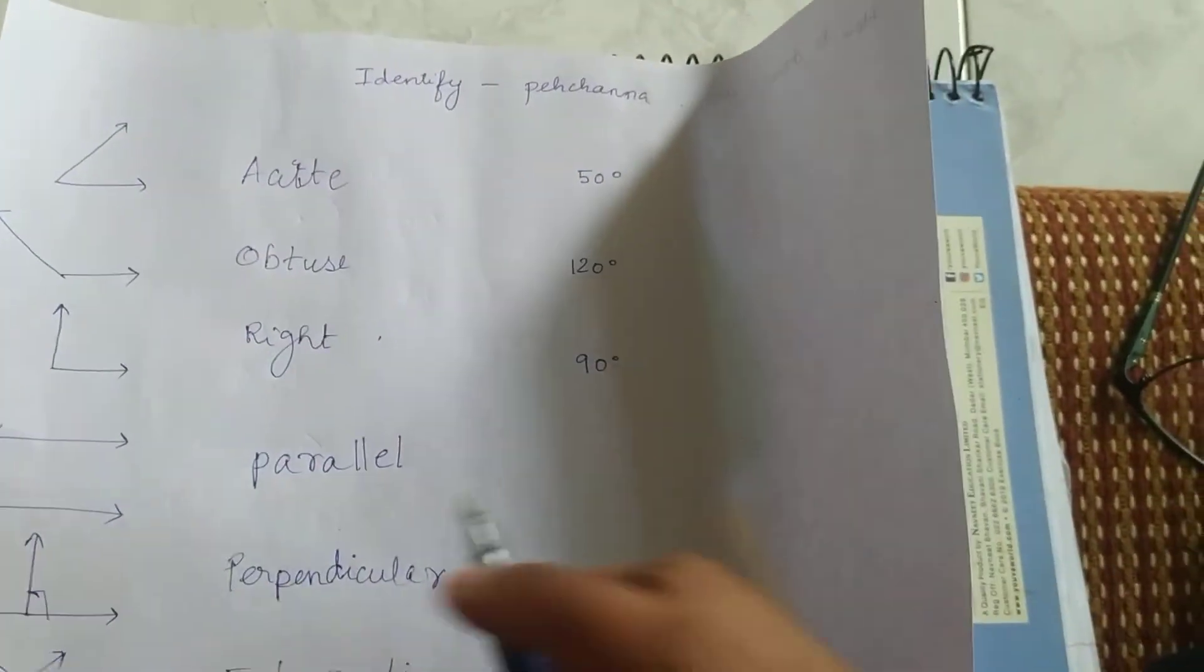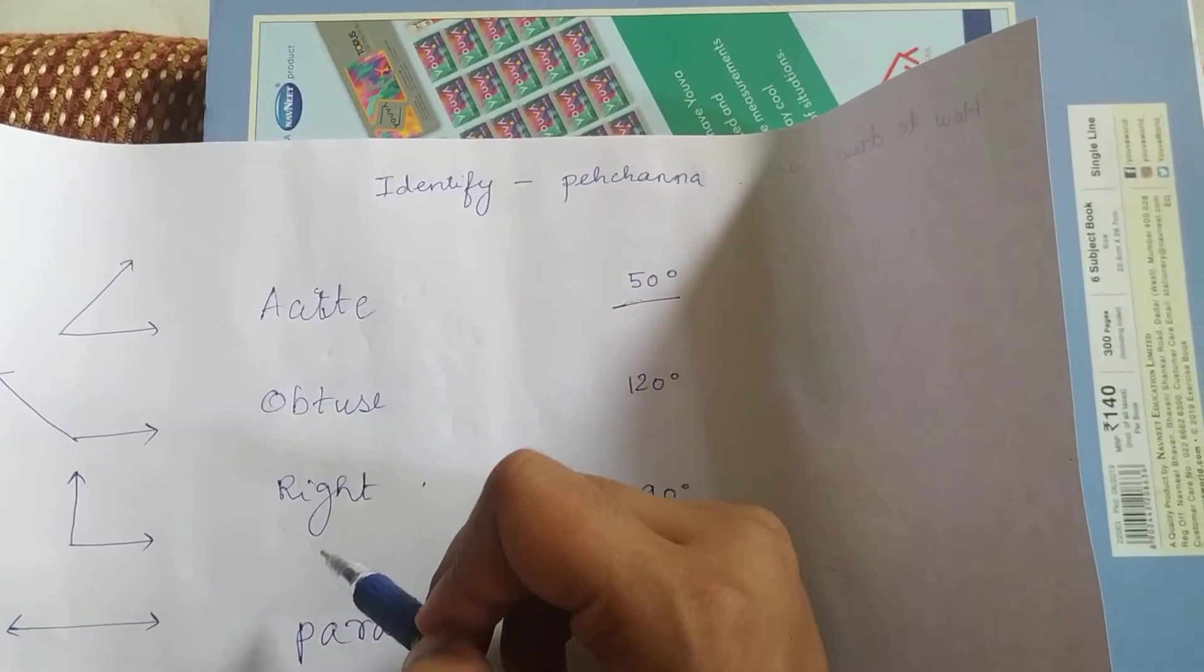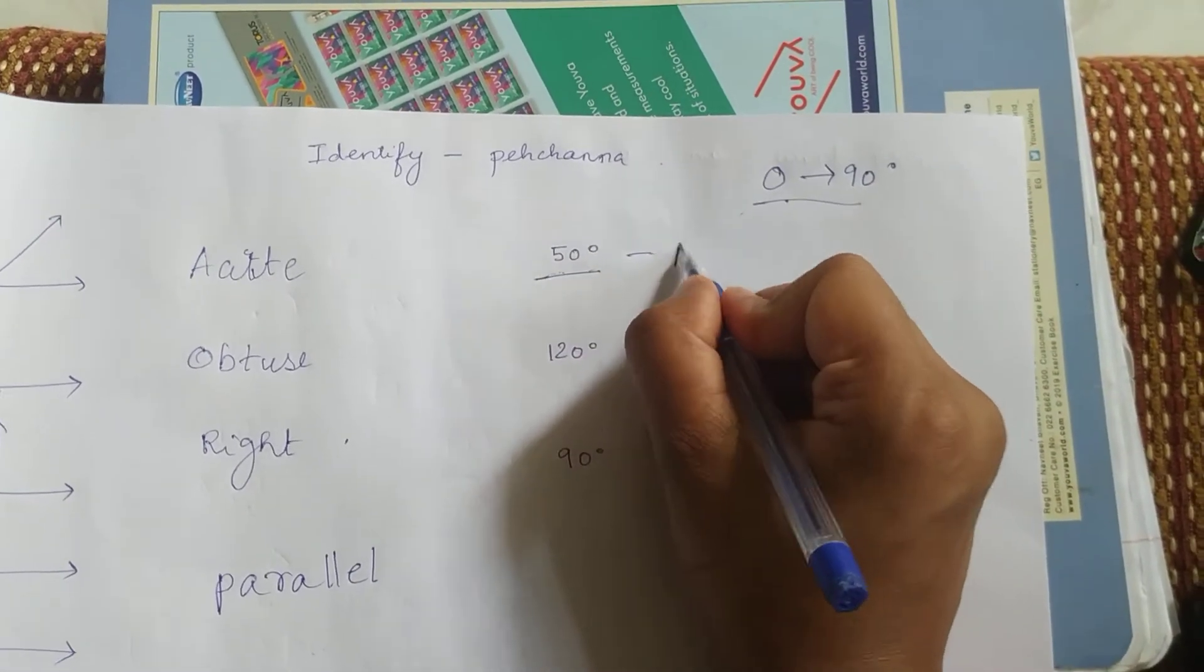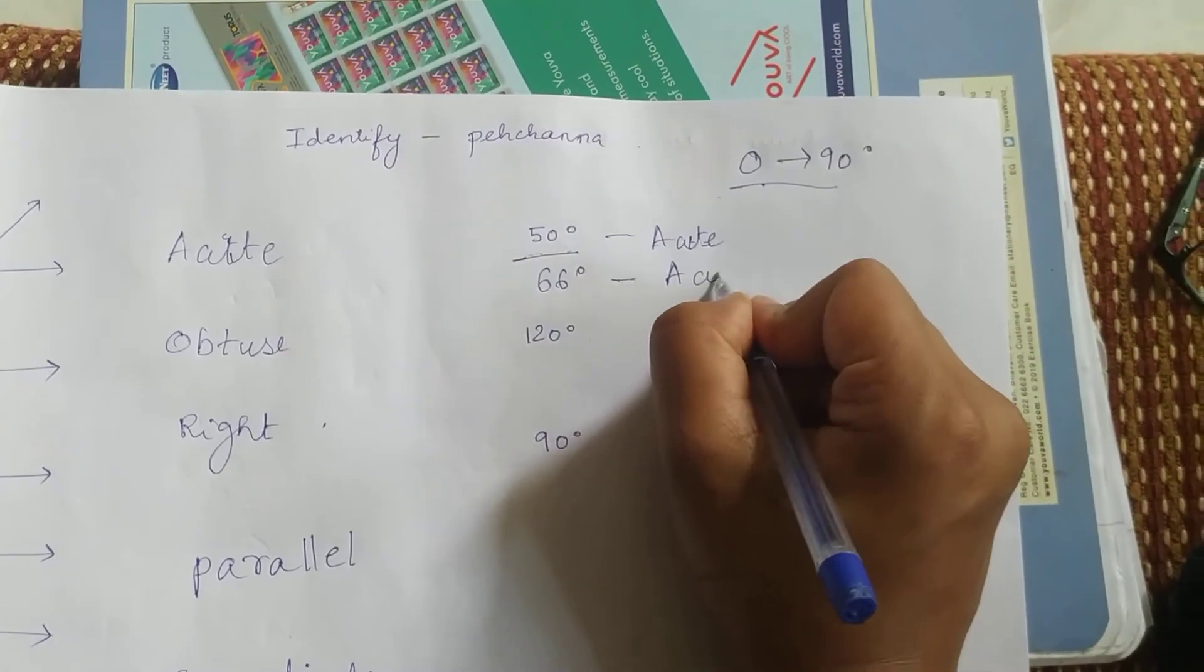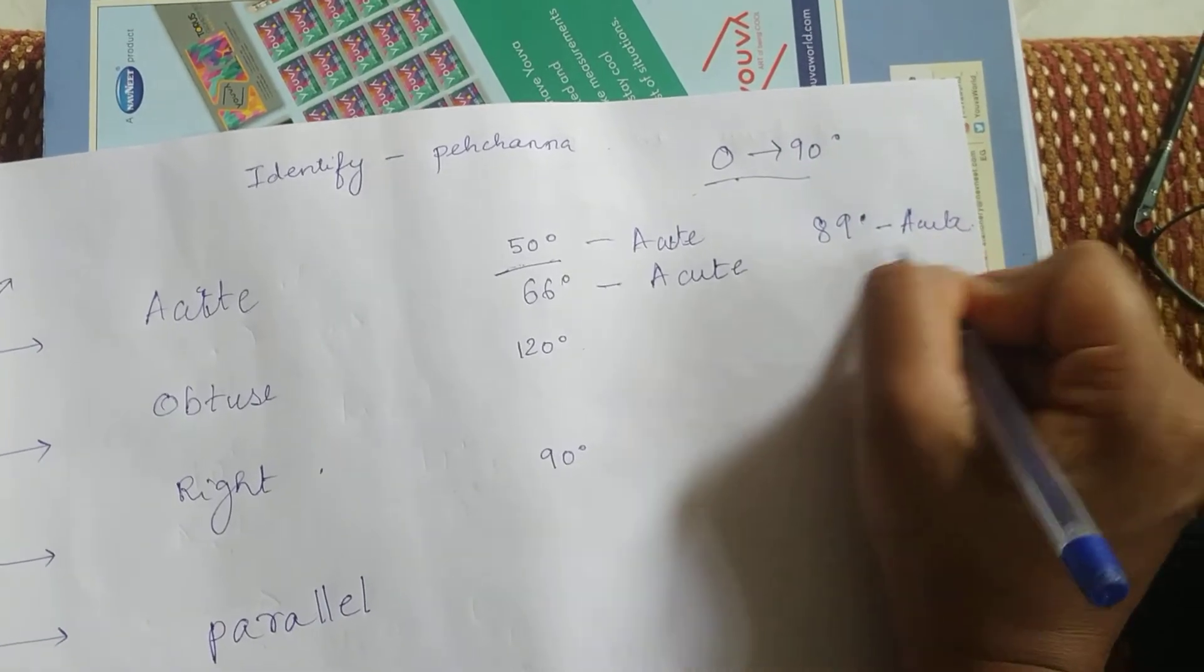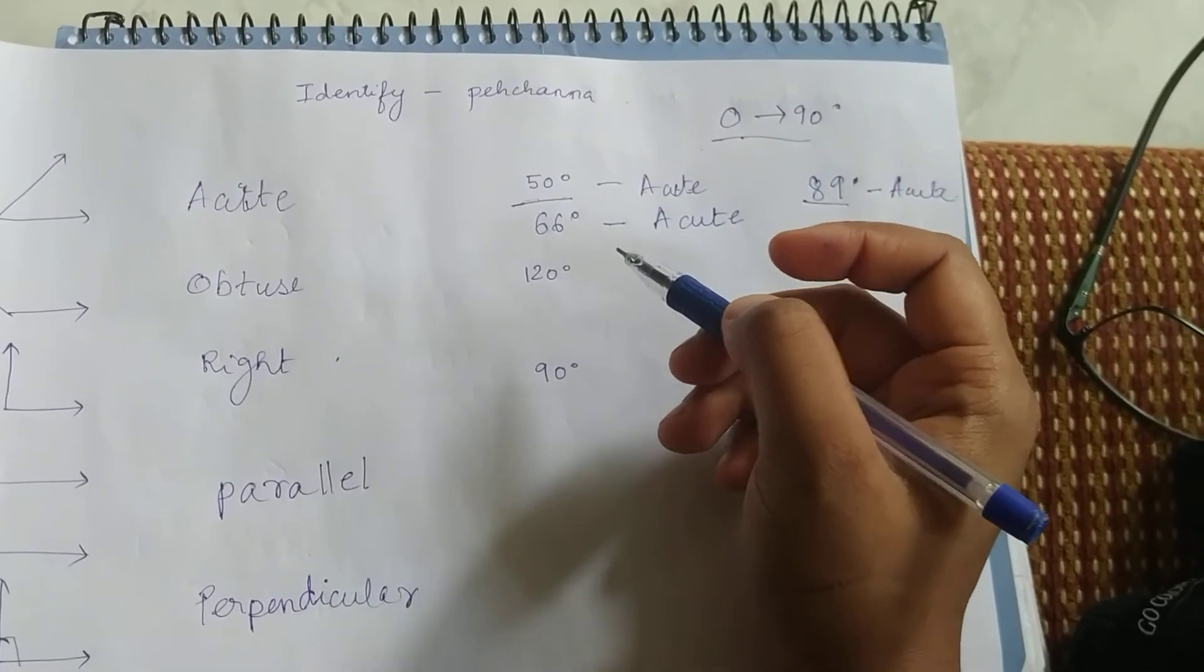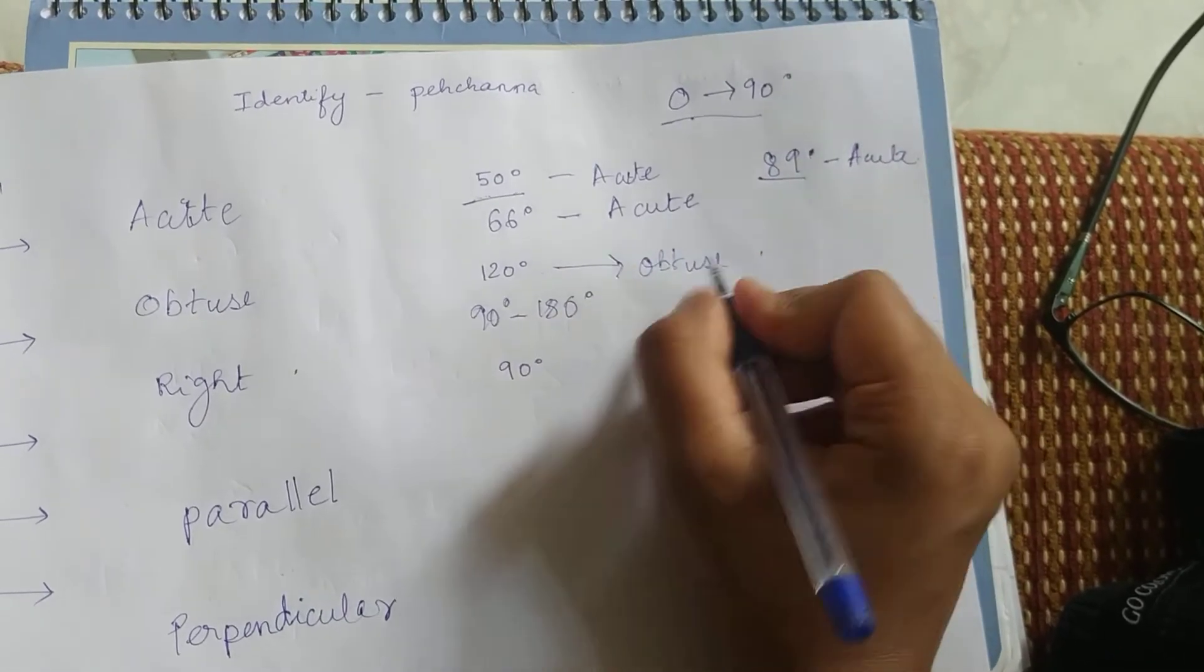Now, if we have to understand without drawing, what will we do? Is a 50 degree angle acute, obtuse, or right? Let's always remember, from zero to 90, if it's less than 90, then it is acute. So 50 is acute because it comes between 0 to 90.